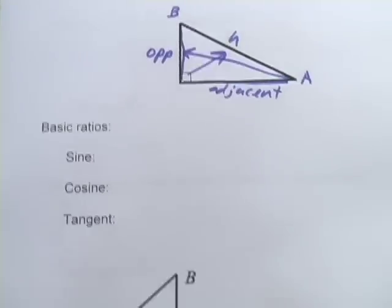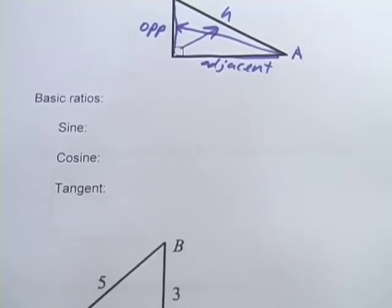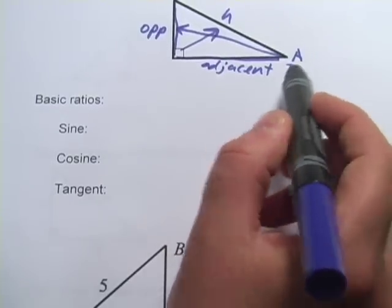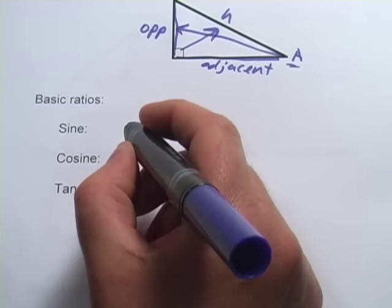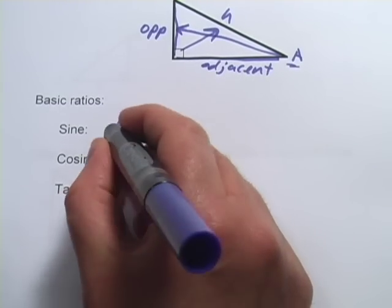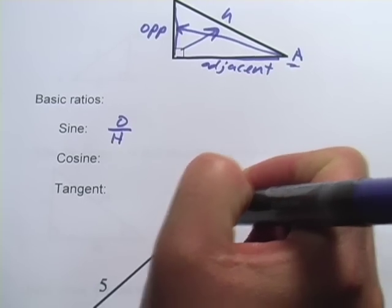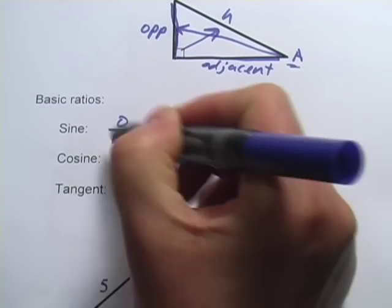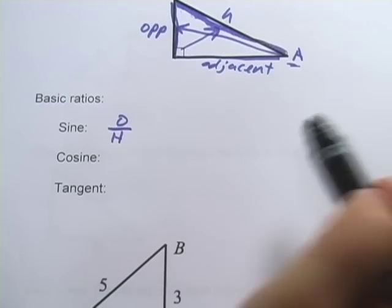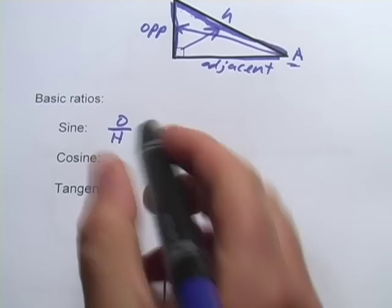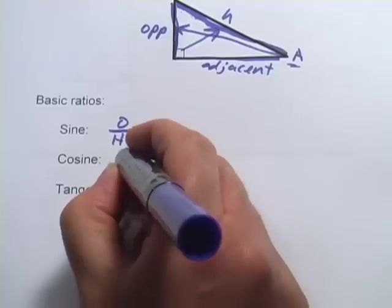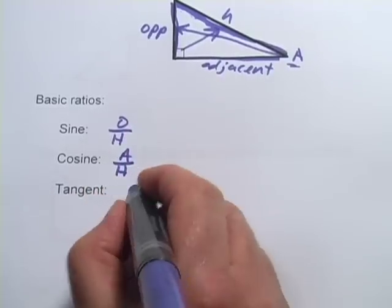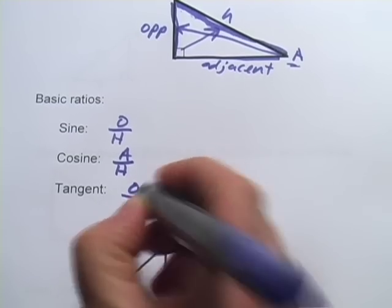The second is how to do the ratios. So for example, the sine of, let's say, angle A here. Well, the sine is a ratio of the opposite over the hypotenuse. So it would be the length of this side right here, the opposite, over the length of the hypotenuse. The cosine is the ratio of the adjacent side over the hypotenuse. And the tangent is the opposite side over the adjacent side.